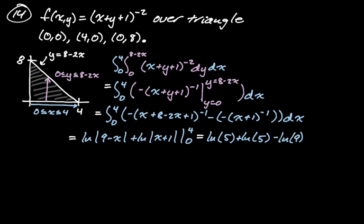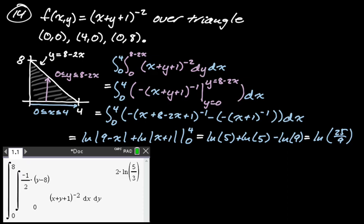By properties of logs, ln 5 + ln 5 = ln 25, and subtracting ln 9 gives ln(25/9). Running it through the calculator confirms this. We can also write it as 2 ln(5/3), since coefficients become exponents — that's ln((5/3)²) = ln(25/9).